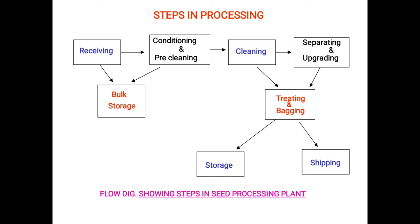After the cleaning operation, you go for separating and upgrading of the seeds, or directly to treating the seeds and bagging operations. After separating and upgrading, the next step is treating and bagging — treatment is given to the seeds and they are packed into bags. After bagging, the seeds go to storage or shipping.